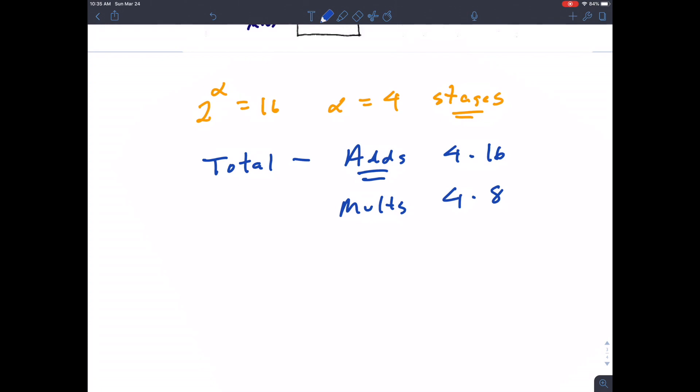So that's the n log base two of n is what we would get in general for adds. Log base two of 16 is four, n is equal to 16. These are complex adds, by the way. And then for multiplies, this would be n over two times the log base two of n on the total number of multiplies on an n point FFT.